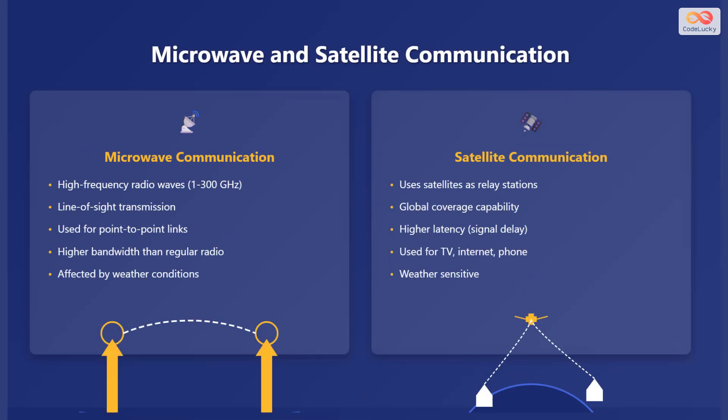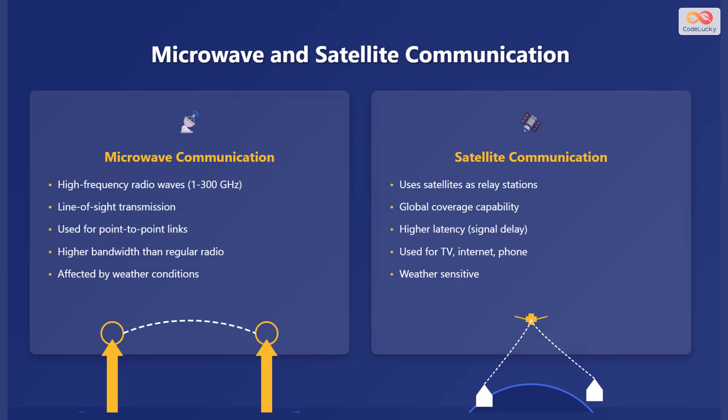Now let's explore microwave and satellite communication in more detail. Microwave communication utilizes high-frequency radio waves ranging from 1 to 300 gigahertz for line-of-sight transmission between point-to-point links. It offers higher bandwidth compared to regular radio waves but is susceptible to weather conditions. Satellite communication uses satellites as relay stations to provide global coverage for services like television, internet, and phone. However, satellite communication introduces higher latency or signal delay and is also sensitive to weather conditions. These wireless communication methods play a crucial role in connecting people and devices across vast distances.